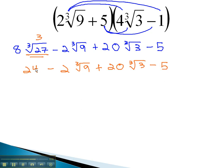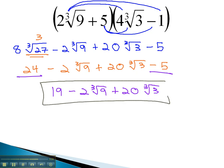We can now look at combining like terms. The 24 minus 5 is 19, minus 2, cube root of 9, plus 20, cube root of 3. With no like terms remaining, this will be our final solution.